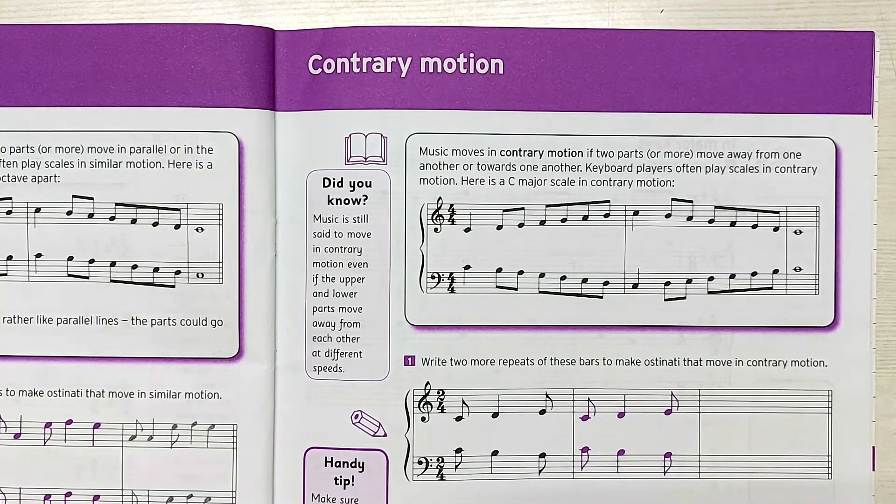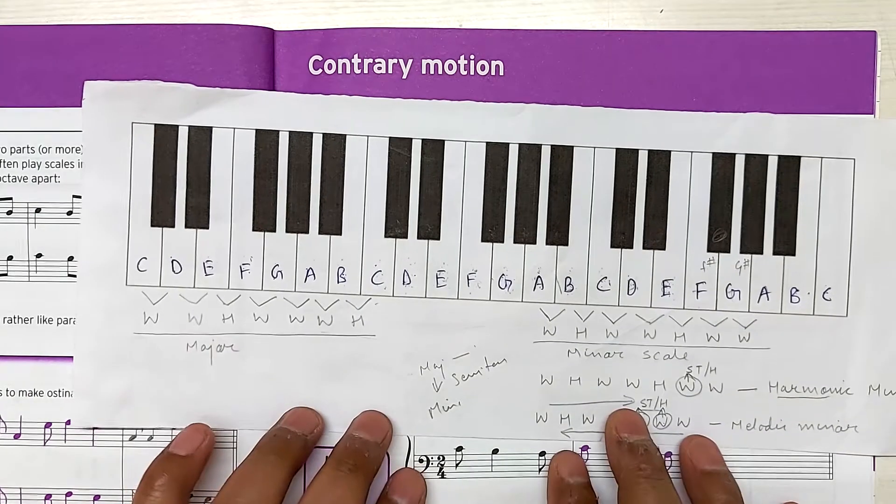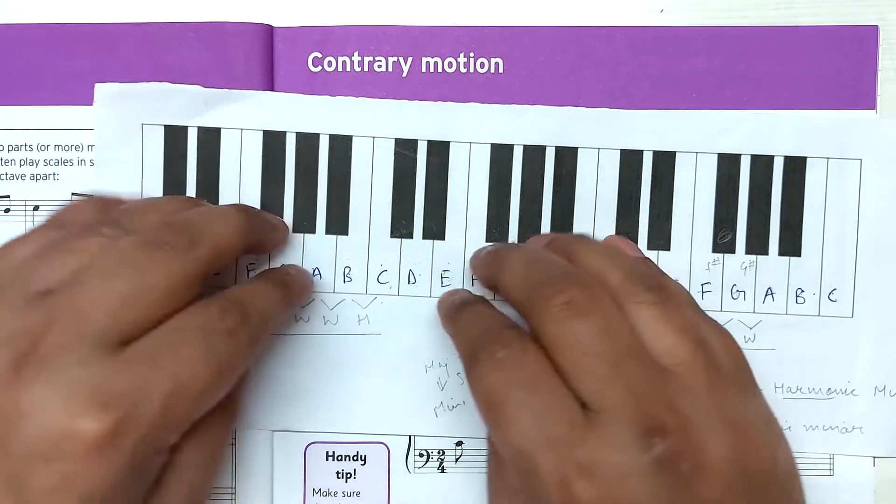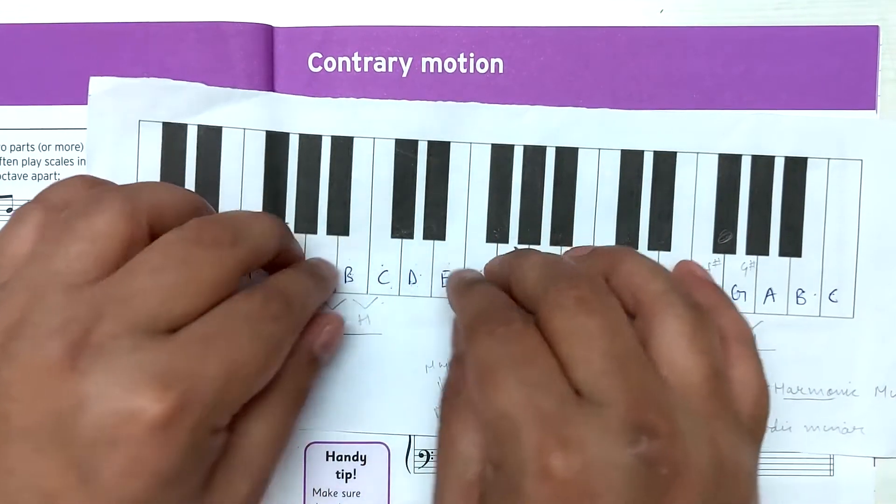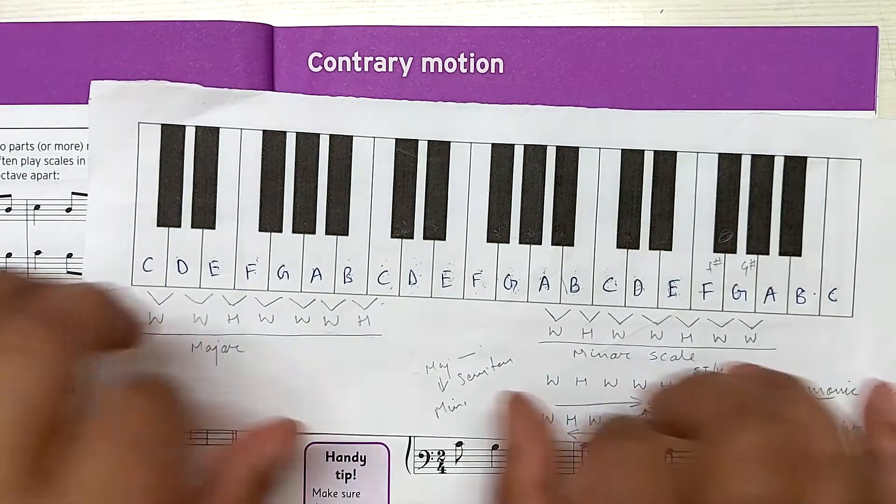So if I want to show you through the keyboard, contrary motion is like you start with both thumbs on C and then you go open it like that and then you come back. So they're going opposite and they're coming back to each other. That's called contrary motion.